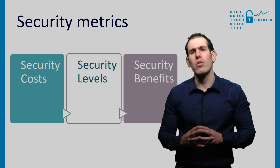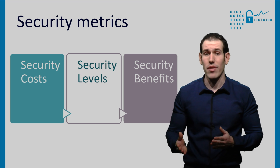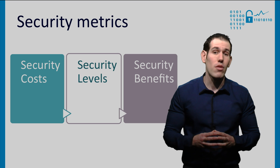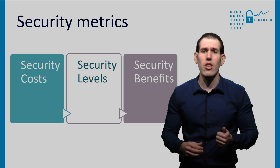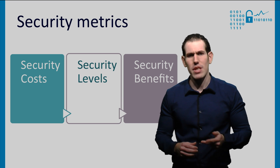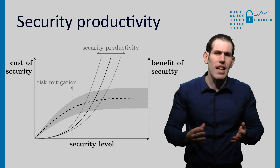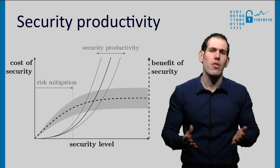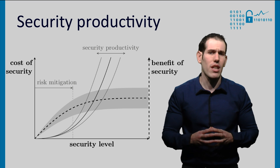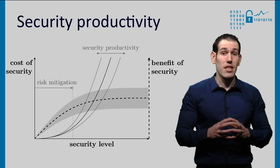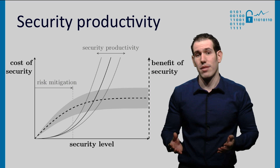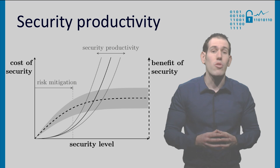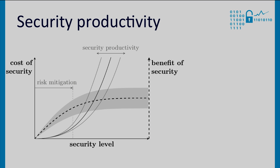It is helpful to include an intermediate step: the security level. In the following, we will define and explain the interaction among these three variables — security cost, security level, and security benefits. Let's analyze the relationship starting with cost and security level. Spending a certain amount of resources will get you a certain security level. This is the security productivity function, represented by the solid line in the figure.